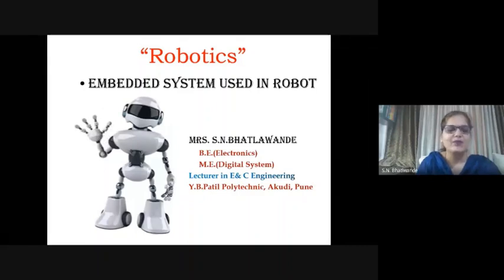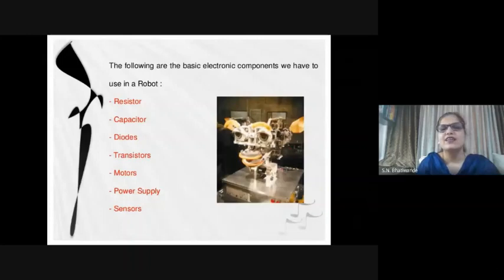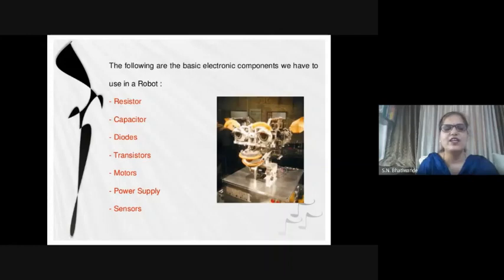In previous sessions of this online course, you have learned about the basic components, basic devices, different sensors and different motors. These are the basic electronic components we have to use in a robot: resistors, capacitors, diodes, transistors, different motors, power supply, and different sensors.